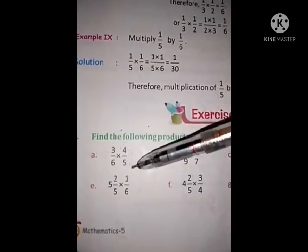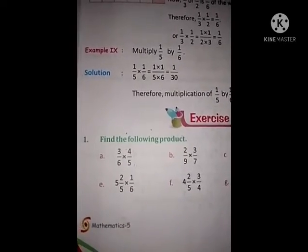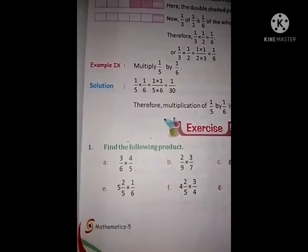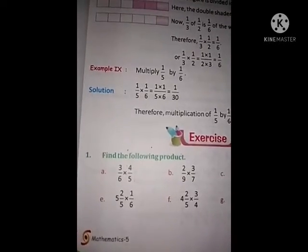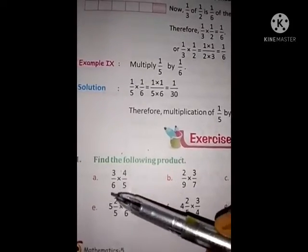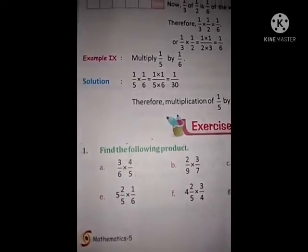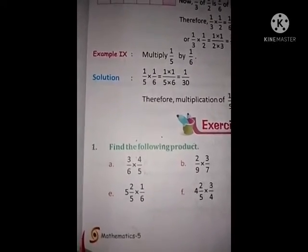Just multiply this. 6 into 5, 3 into 4. And we can also make the number into simpler form, or we can reduce the numbers. We can reduce the numbers into lowest form as we can do by dividing or by cutting. Okay.